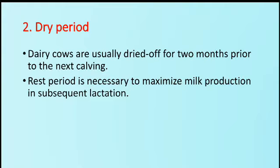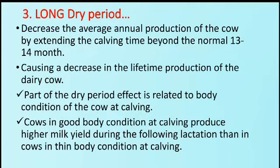The next factor is the dry period. Dairy cows are usually dried up for two months prior to the next calving. This rest period is necessary to maximize milk production in the subsequent lactation. A long dry period decreases average annual production by extending calving intervals beyond the normal 13 to 14 months, causing a decrease in lifetime production. The dry period effect is related to body condition at calving — cows in good body condition at calving produce higher milk yield in the following lactation than cows in thin body condition.